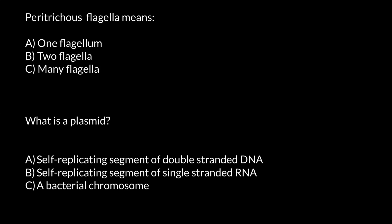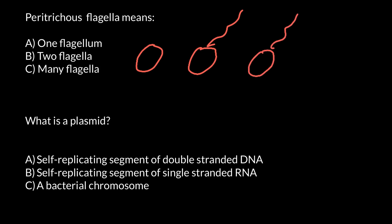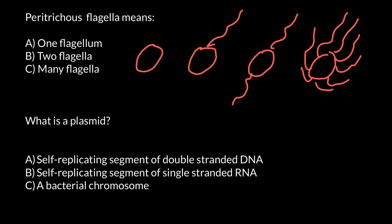Hello and welcome to Nikolai's Genetics Lessons. Today I have prepared two questions for you. The first question is: what does Peritricus mean? Before I give you the answer, I want to help you memorize different types of bacteria depending on the presence, absence, and position of flagella on the surface. The first type has no flagella, the second has one flagellum, the third has two flagella, and the fourth has many flagella on every side.